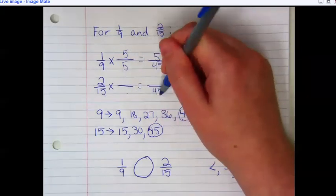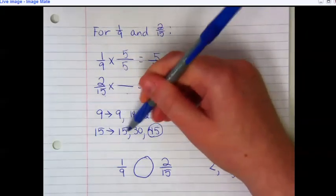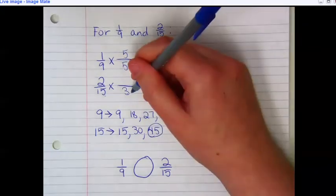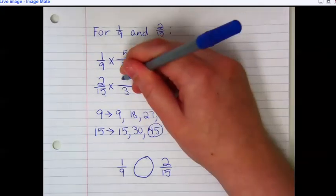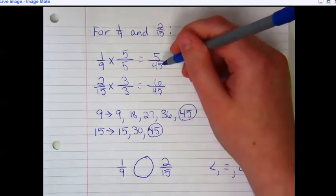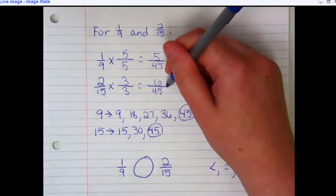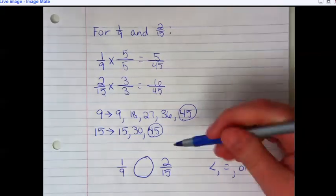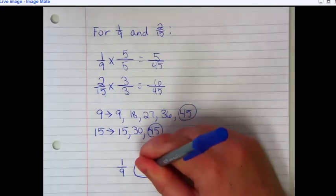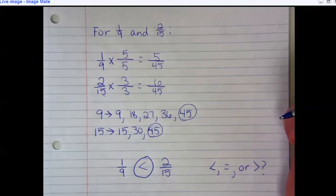15 times what is 45? Well, 15 times 1, 2, 3 times 3 is 45. What I do to the denominator, I have to do to the numerator. 2 times 3 is 6. Now I can see that this one is larger than this one. So 1/9 is less than 2/15.